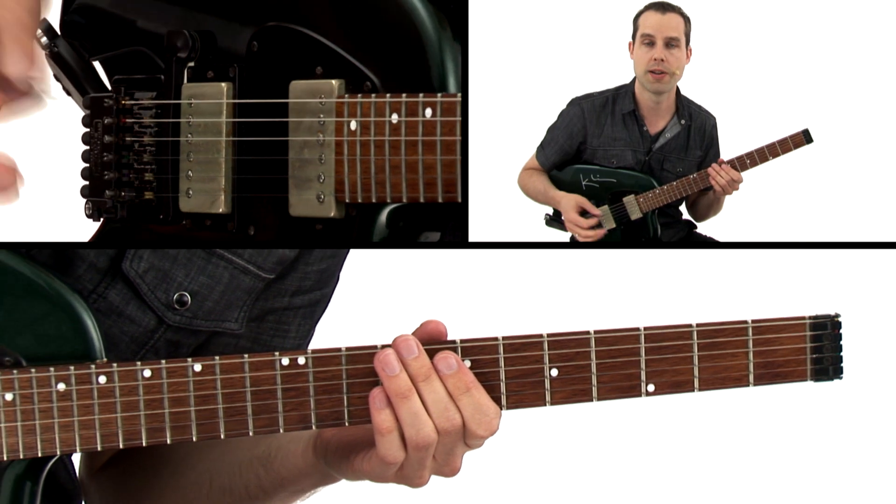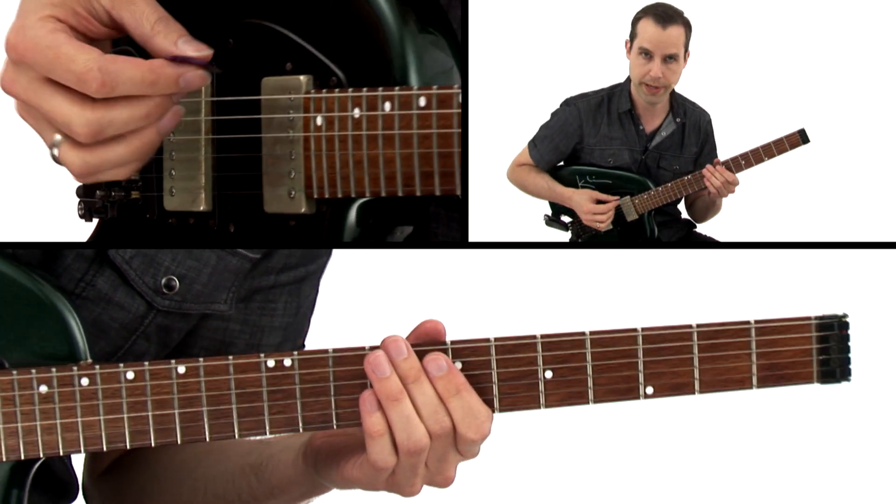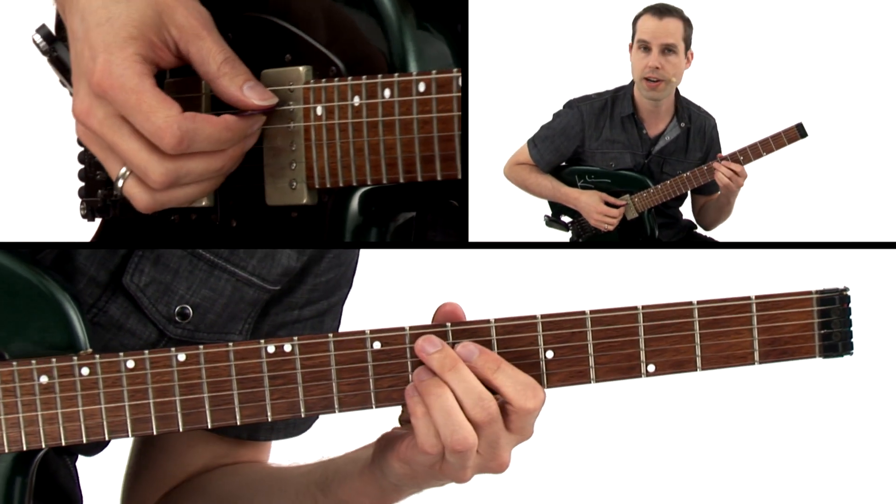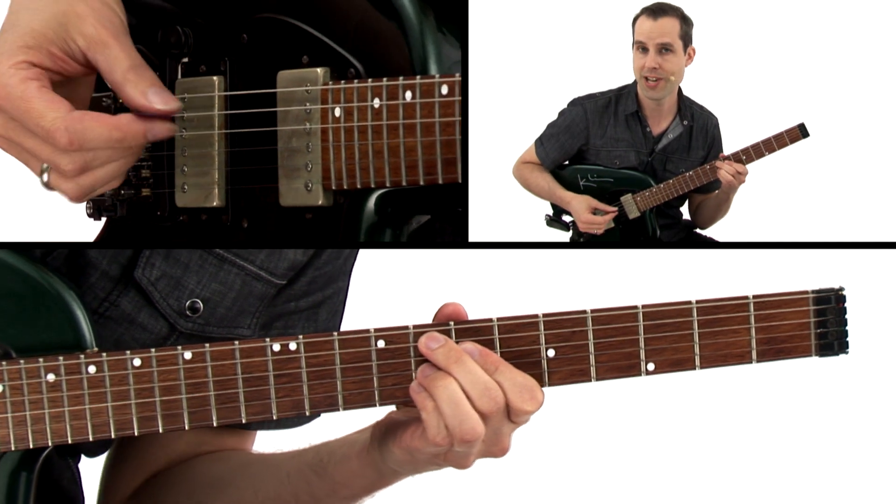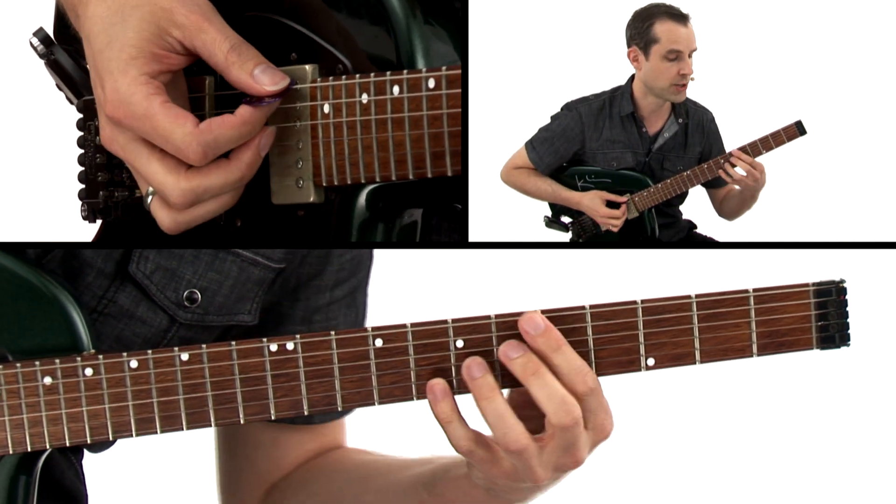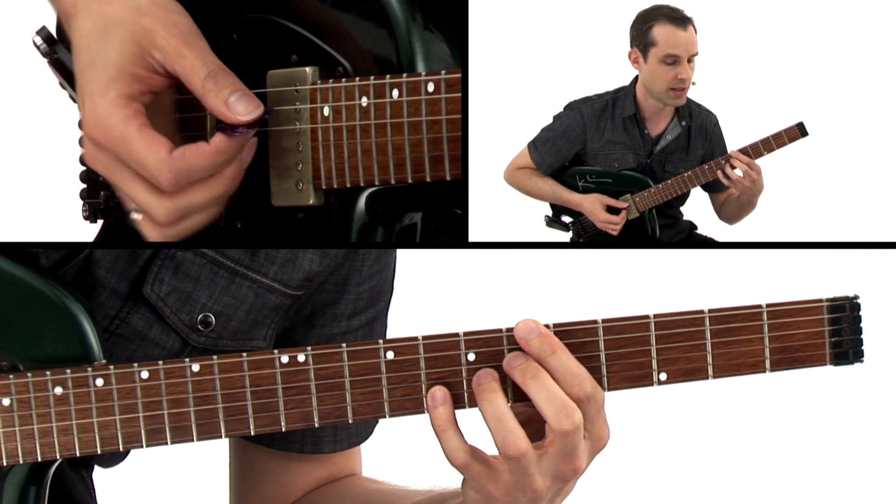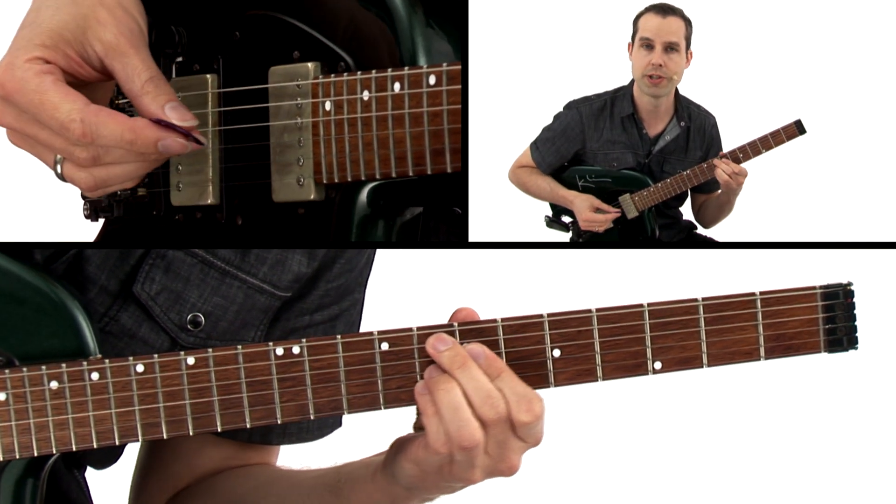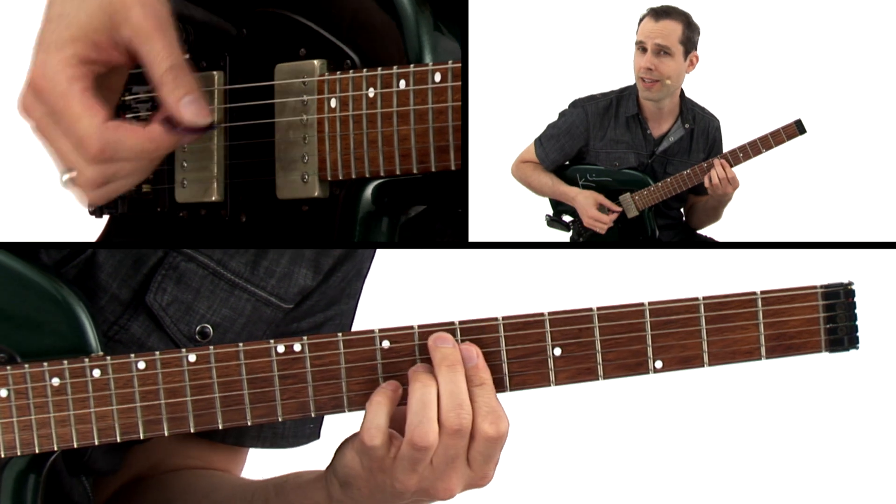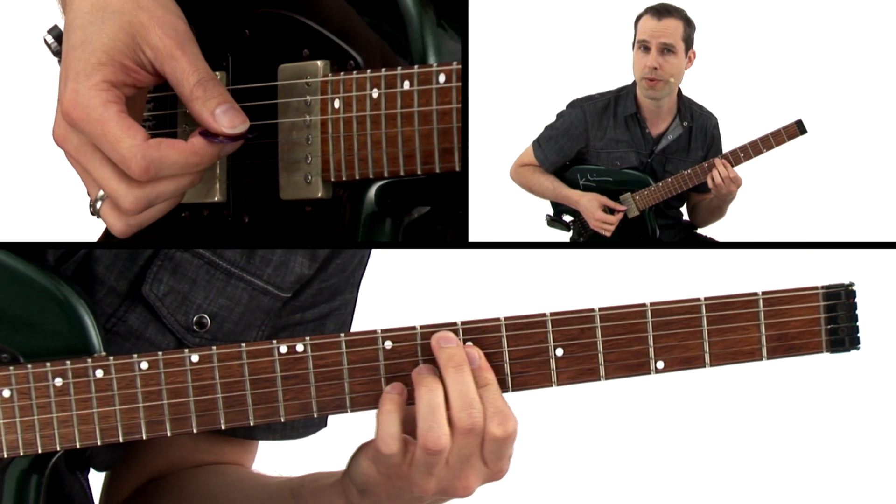Now let's talk about the chord changes and what they are, then we can talk about how we're going to use the arpeggios over them. So the chords are F7 or F9 for one measure, then we go to a Bb13 for one measure, then back to F9 for one measure, then we're going to play F7 sharp 9 for one measure.